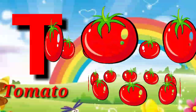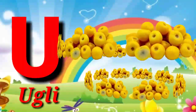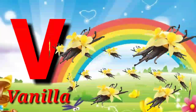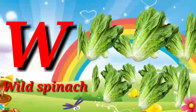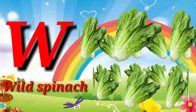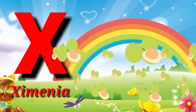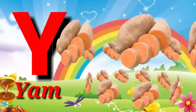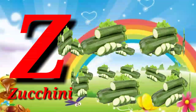T for Tomato, Tomato means Tomato. U for Ugly. V for Vanilla. W for Wild Spanish, Wild Spanish means Saag. X for Xenia. Y for Yam. Z for Juchini, Juchini means Kheera.